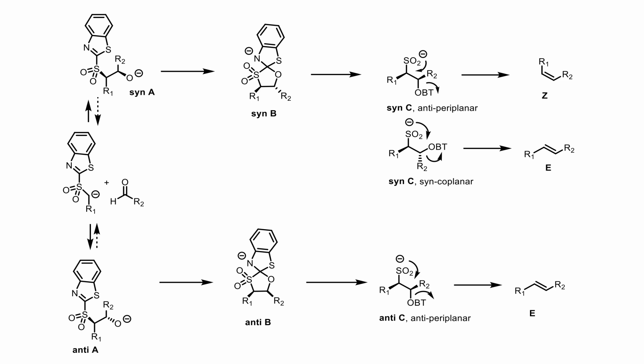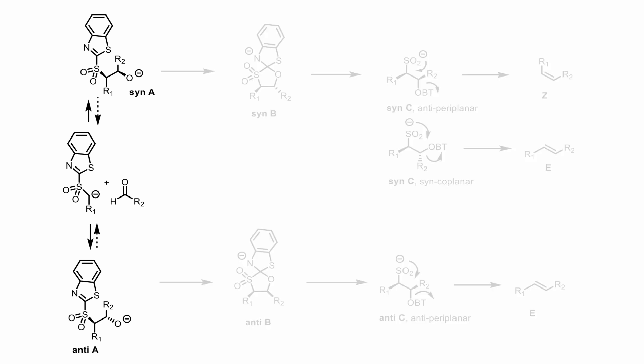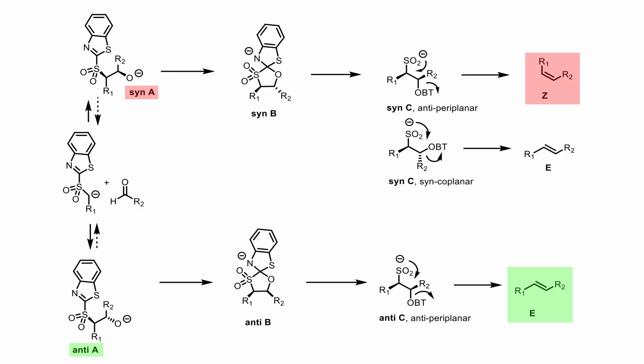Now on to the stereochemistry. This is a very difficult topic, which is currently still evolving, so we will merely discuss a simplified scheme that covers the most important concepts. The stereochemical outcome is set in the first step, meaning the formation of syn-A or anti-A, provided all other steps are stereospecific and irreversible. This is usually the case with aliphatic aldehydes and aliphatic sulfones, meaning R1 and R2 are alkyl groups. To control E and Z stereochemistry, one has to work with the transition states leading to syn-A and anti-A, given that the elimination to give the olefin is anti-periplanar — which means anti-C gives E olefins and syn-C gives Z olefins.